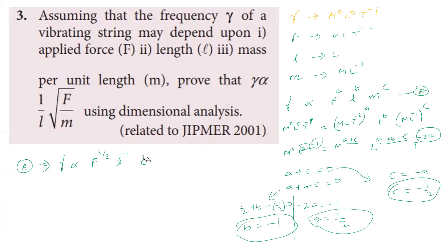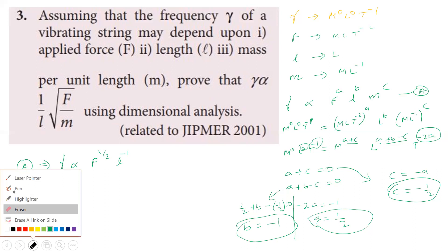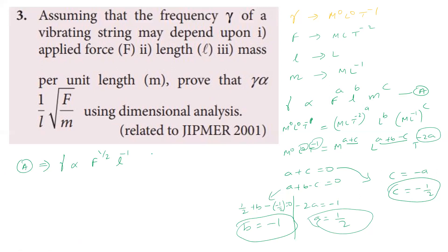Therefore, frequency is directly proportional to F^(1/2) times M^(-1/2) times L^(-1), which simplifies to (1/L) times the square root of F divided by M. This proves the required relation.